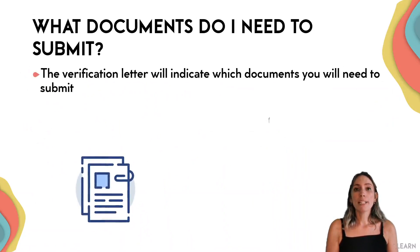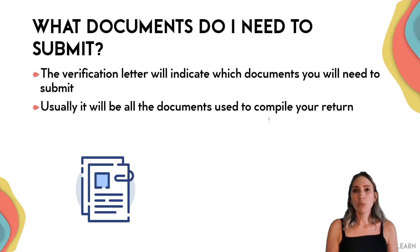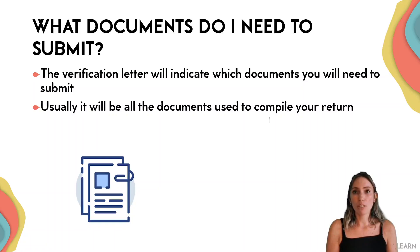What documents do you need to submit? Basically the documents you'll supply to SARS will either be stated in the letter, or they'll typically be the documents you used to complete your tax return. For example, if you received a travel allowance and claimed using a logbook, you'll need to supply SARS with a detailed logbook to allow that claim, as well as your medical certificate. Any information in your tax return must be verifiable and match what you've submitted.